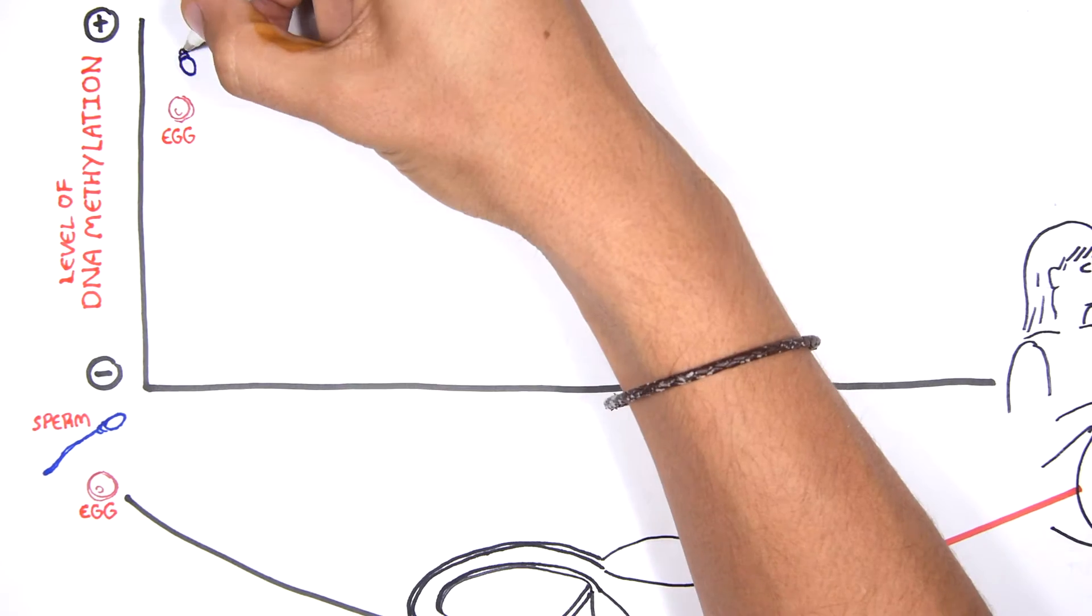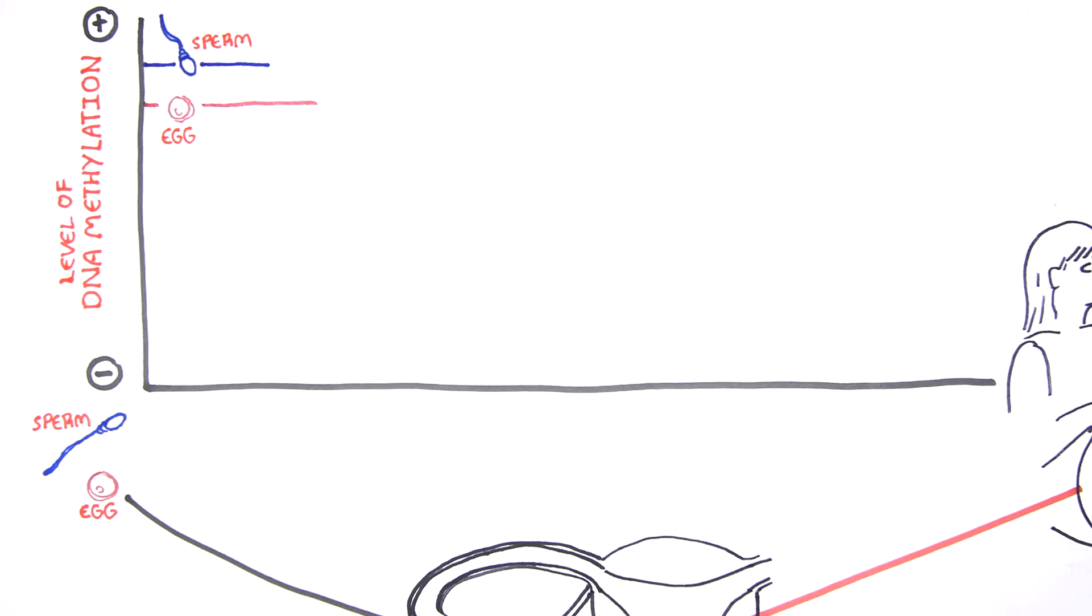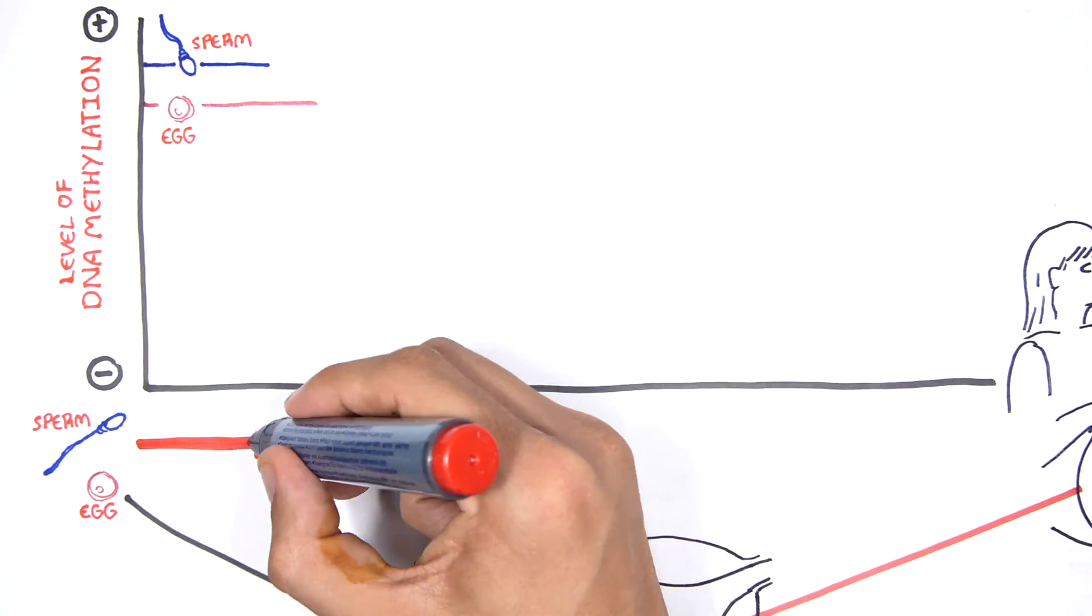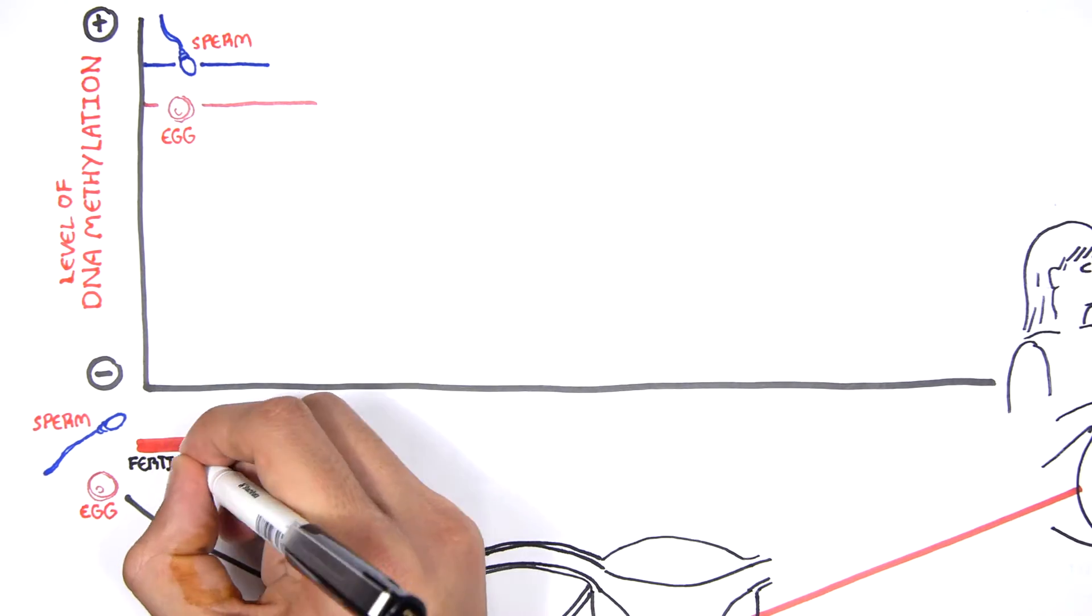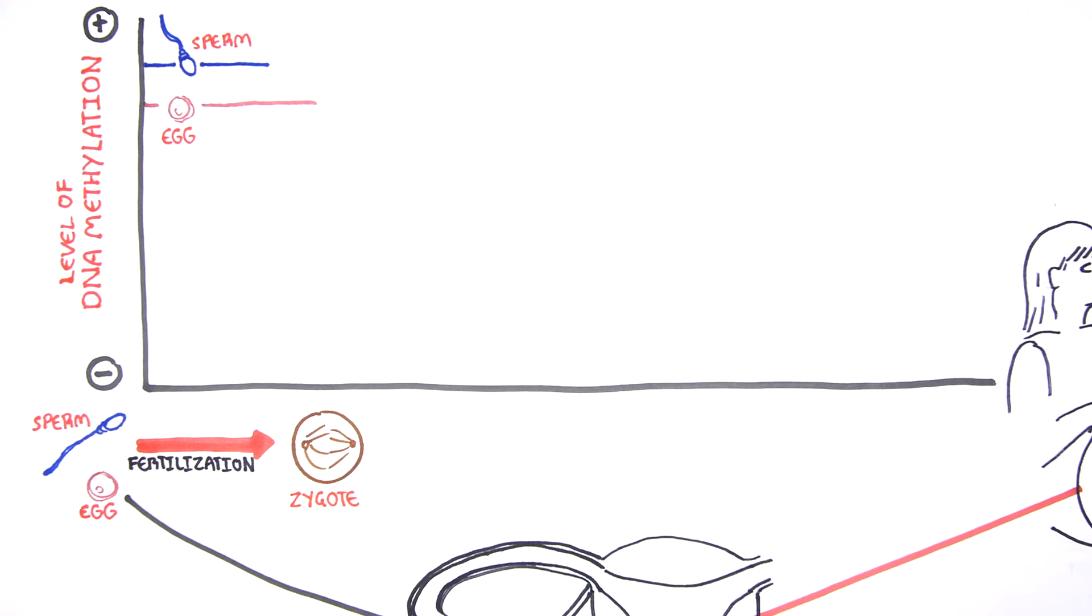The female egg and male sperm, as I already mentioned, carry their own DNA methylation patterns. During fertilization, a zygote is formed and the maternal and paternal genome and epigenome are contained in one cell.